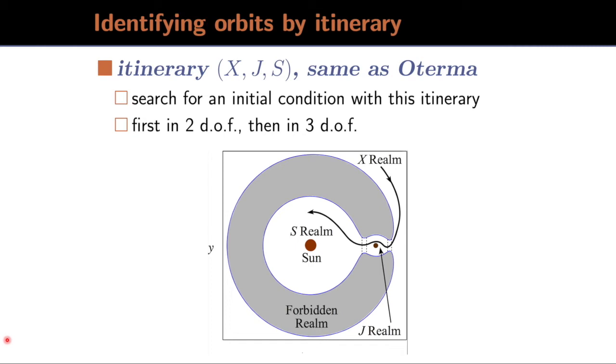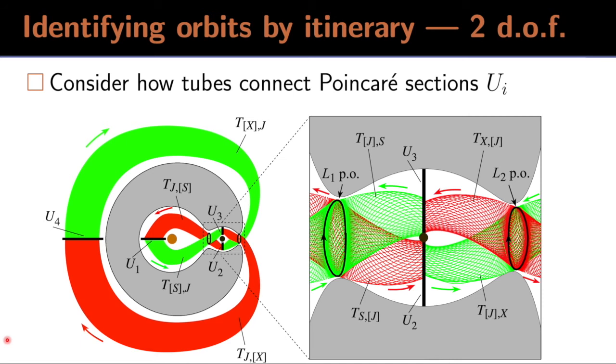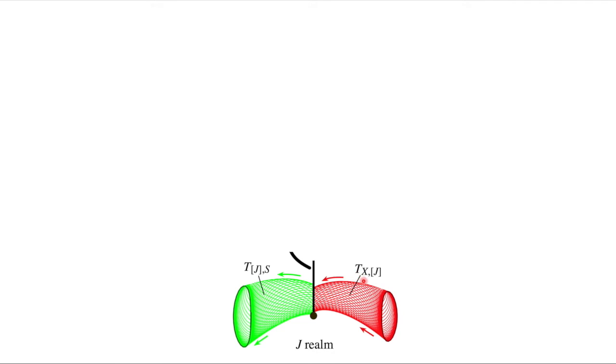So we consider how the tubes connect on different Poincaré surfaces of section. And in this particular case, we'll look at U3. This is where an unstable manifold from L2 intersects a stable manifold from L1. Just isolating that portion. We can label these tubes. This is TXJ. It's currently in the J realm and it came from the X realm. This green tube, it's JS, where it's currently in the J realm. And it's going to the S realm.